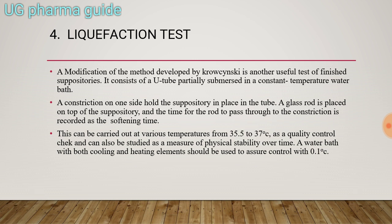The fourth test is the liquefaction test, a modification of the method developed by Krowczynski. It consists of a U-tube partially submerged in a constant temperature water bath. A constriction on one side holds the suppository in place. A glass rod is placed on top of the suppository, and the time for the rod to pass through the constriction is recorded as the softening time. This can be carried out at various temperatures from 35.5 to 37 degrees Celsius as a quality control check and as a measure of physical stability over time.